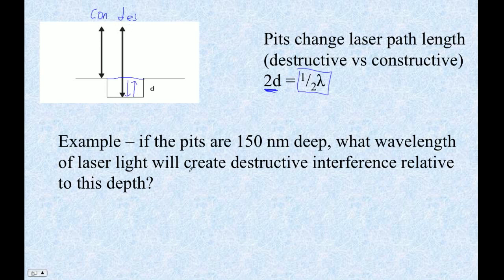So let's just use this formula. It's really pretty simple. If the pits are 150 nanometers deep, what wavelength of laser light creates destructive interference relative to this depth?